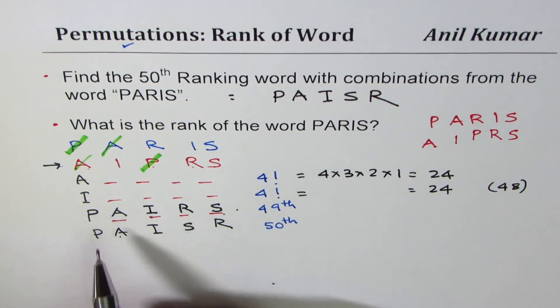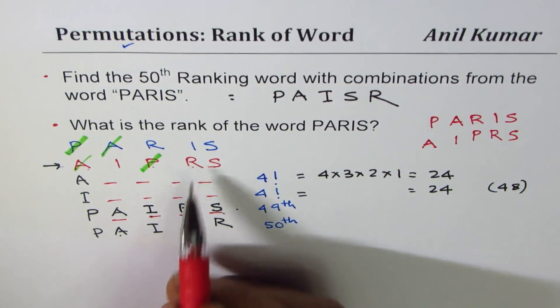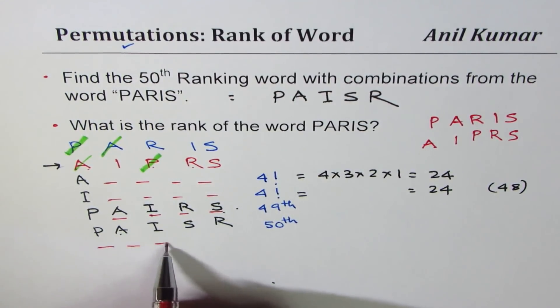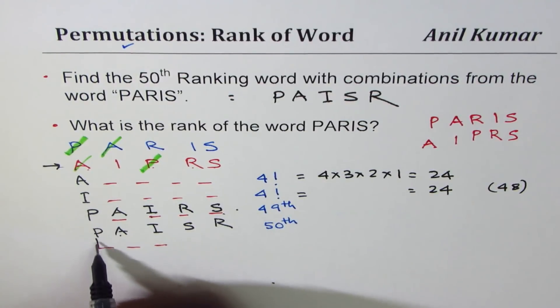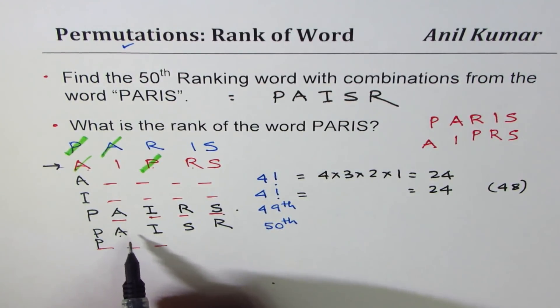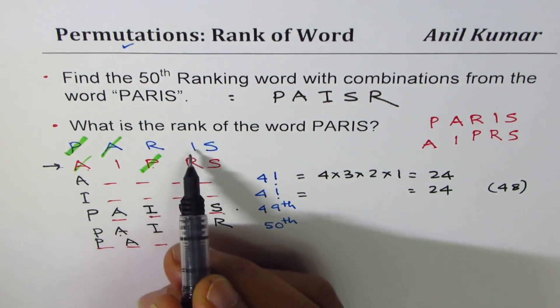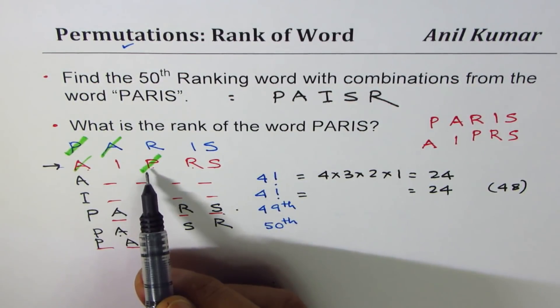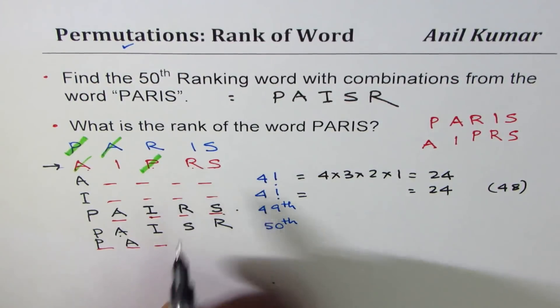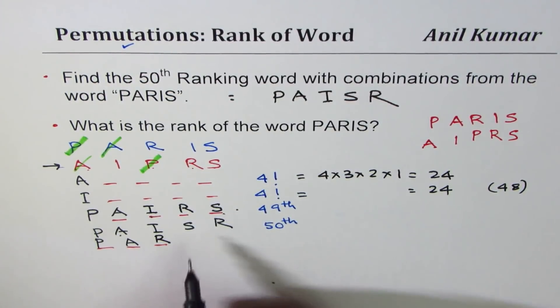The next word should be P, A, R. So next word we'll start with - we have already taken all words starting with P, A, I, we exhausted this list. Now P is already taken care of. Next letter is R.